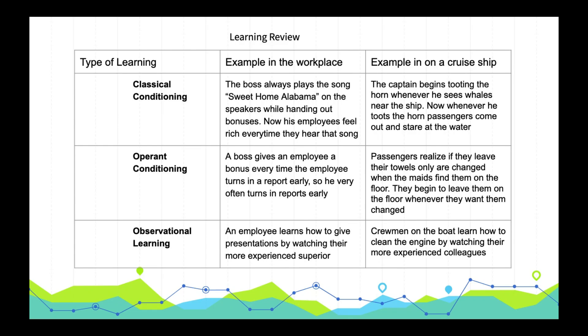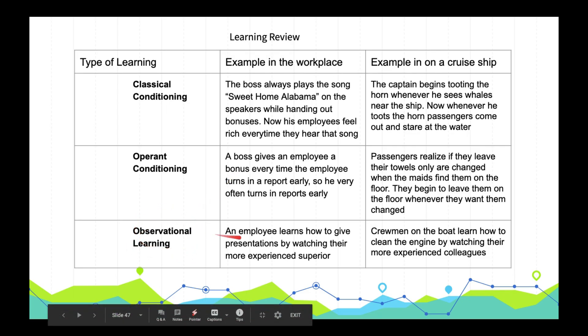To come full circle: classical conditioning — the boss plays Sweet Home Alabama when handing out bonuses, so now whenever you hear that song you're in a great mood. Operant conditioning — a boss gives an employee a bonus every time they turn in a report early, so the employee turns in reports early very commonly. Observational learning — an employee learns how to give presentations by watching their more experienced superiors.